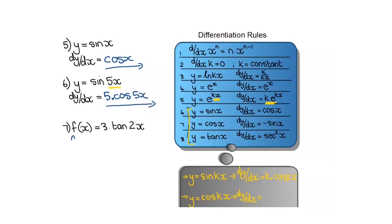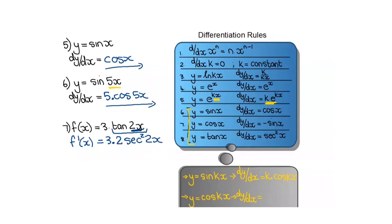In the next example, number 7, the derivative will be: I've got a constant 3, so I write down the constant 3 first. Then if I differentiate tan(2x), the derivative of tan is sec squared, but it's 2x, so I have to remember to multiply by k which is 2. The derivative of tan is sec squared, and if you started with 2x you end up having angle 2x. Simplifying: 3 times 2 is 6, so it's 6 sec squared(2x).